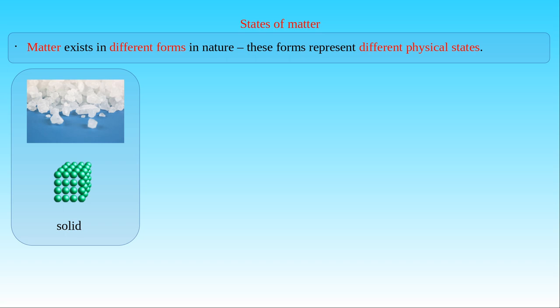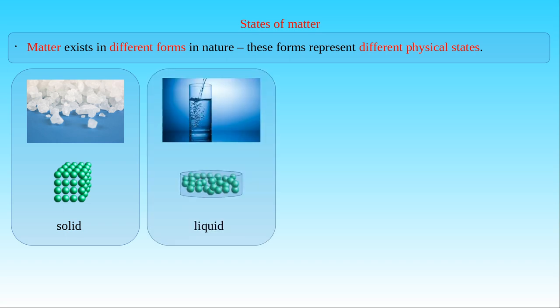Solids have a definite shape, mass, and volume, and do not conform to the shape of the container in which they are placed. The second state of matter is the liquid. In a liquid, the particles are more loosely packed than in a solid and they are able to flow around each other. As a result, any liquid has an indefinite shape, and it will conform to the shape of its container. Liquids have normally lower density than the solid form of matter, but they are still incredibly difficult to compress.